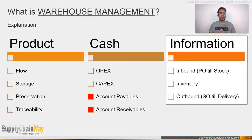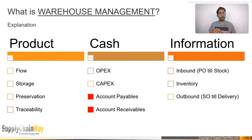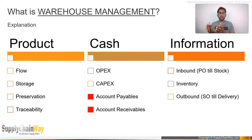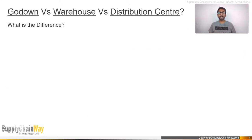So warehouse management covers product, cash, and information. The product side is taken care of by the operations team, while the cash side involves the procurement team when buying new stock and the finance team when making payments. Information is common across all areas. That covers warehouse management.